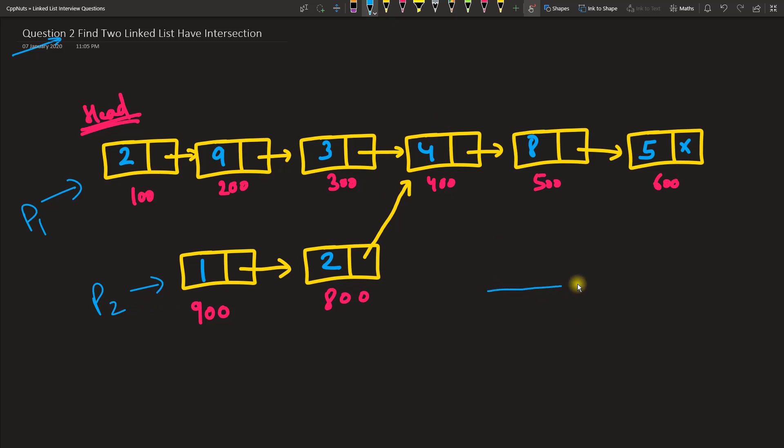Now you have to find whether there is any intersection or not. The thing is there can be no intersection, so this is your p1 and this can be your p2.